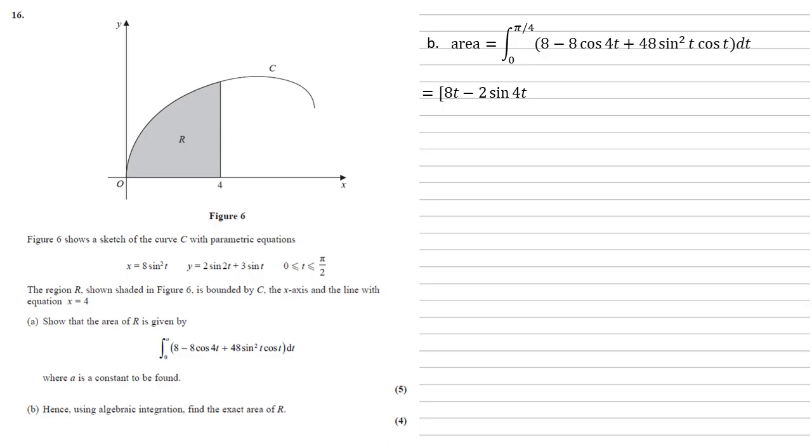For 48 sine squared t cos t, this is of the form sine to a power times cos. When we integrate this, we end up with sine cubed. The power goes up one, the cos disappears, and we divide by the new power, giving us 16 sine cubed t. Differentiating this by the chain rule confirms we get back 48 sine squared t cos t.